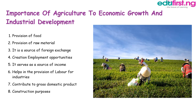What are the importances of agriculture to economic growth and industrial development? Number one is the provision of food — this is the most important aim of agriculture in any society. Number two, provision of raw materials needed by industries for further production. Number three, it is a source of foreign exchange. Number four, it creates employment opportunities. Number five, it serves as a source of income. Number six, it helps in the provision of labor for industries, and it contributes to the gross domestic product.